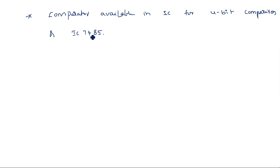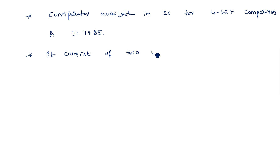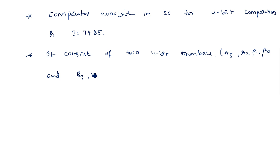IC 7485 represents a 4-bit comparator. This IC is used for the comparison of two 4-bit numbers. It consists of two 4-bit inputs: A3, A2, A1, A0 and B3, B2, B1, B0. Along with these inputs, three outputs are available.